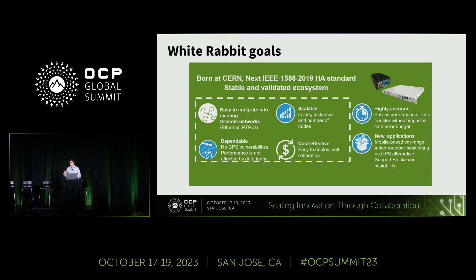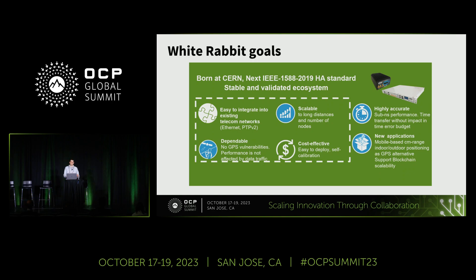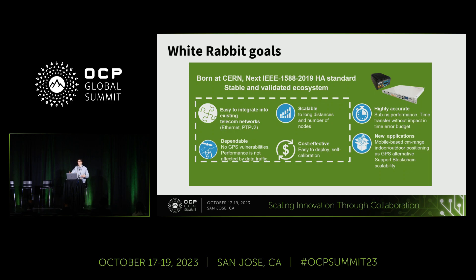White Rabbit is the technology we use for high-accuracy time synchronization. It's very easy to integrate — a classical network protocol that works over Ethernet networks, so mostly any optical fiber out there can benefit from it. It's very scalable: you can deploy not only over long distances but also expand on the number of nodes, providing synchronization to a system with 1,000 end users.